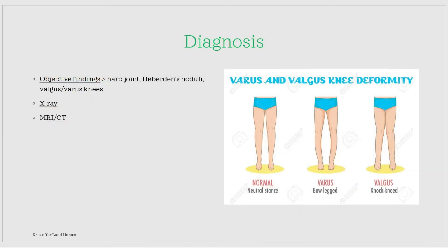If the X-ray is inconclusive and you still have a clinical suspicion of the disease, you can perform an MRI or CT scan to find these typical findings. Blood tests should also be taken for differential diagnosis. Infectious markers, serum urate and hemoglobin should always be taken, as well as a liver panel and kidney panel. If there is suspicion of another disease like rheumatoid arthritis, the appropriate antibody panels should also be performed.